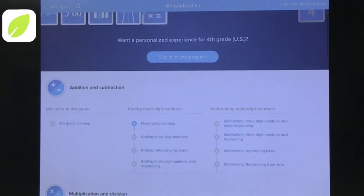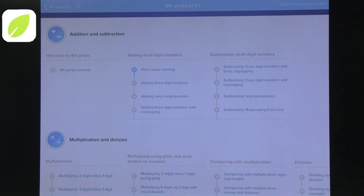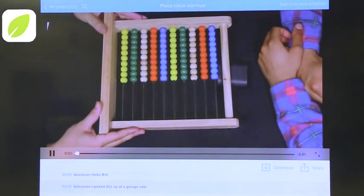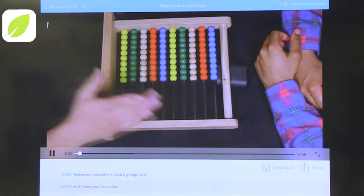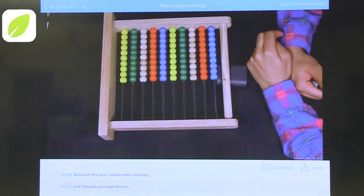Let's go into fourth grade and look at something specific. You can see that they've organized them in a sequence. Let's do the place value warm-up. This is a video, so you can watch the video and you can share it. You can sign in and then save progress so you can see what you've done and what you haven't done.